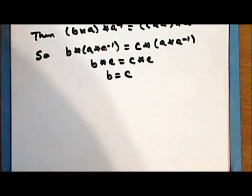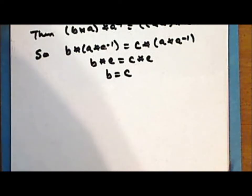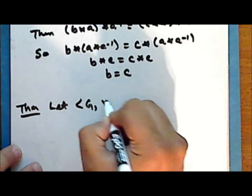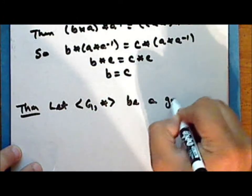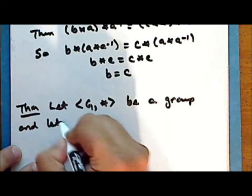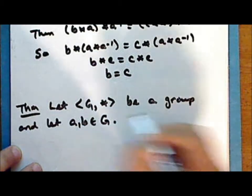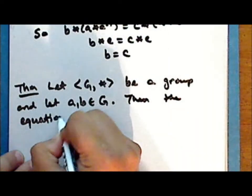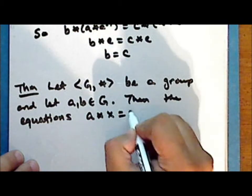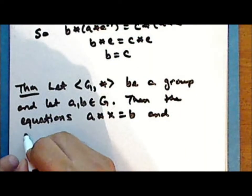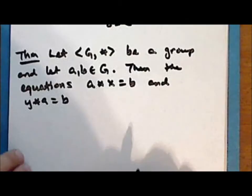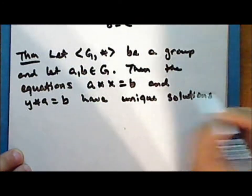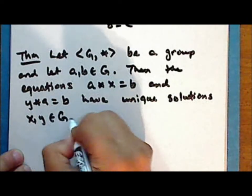This corollary itself has an immediate corollary, but this is a very important fact about groups and so we will state it as a theorem. Let the set G together with the binary operation star be a group. And let the elements A and B be two elements in the underlying set G. Then the equations A star X equals B, and Y star A equals B, have unique solutions X and Y, which are also in the set G.